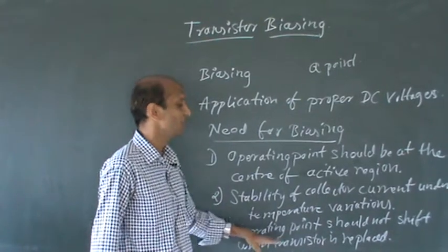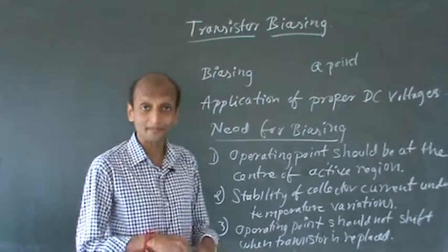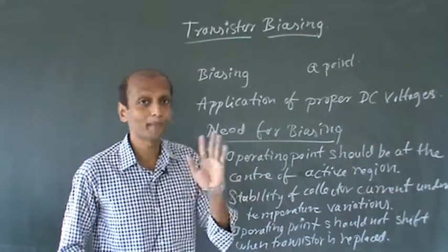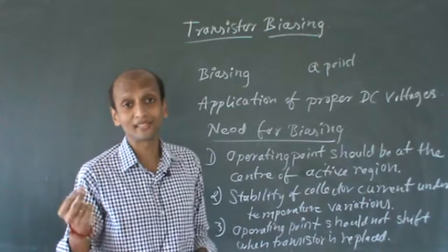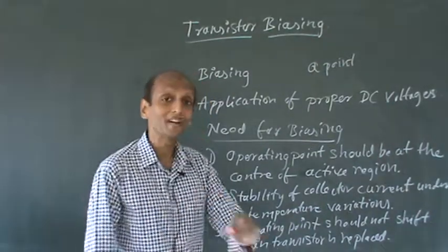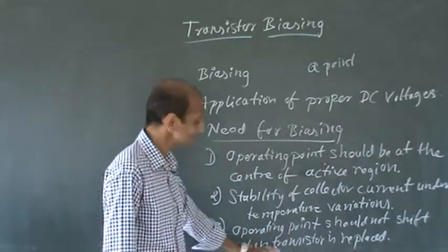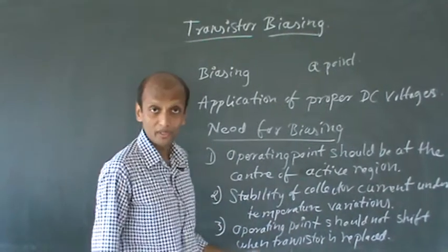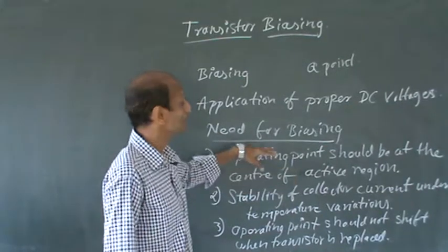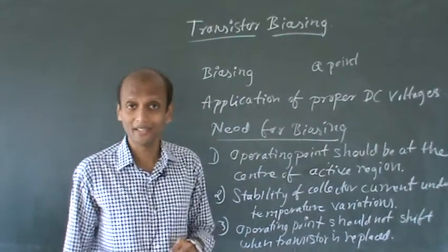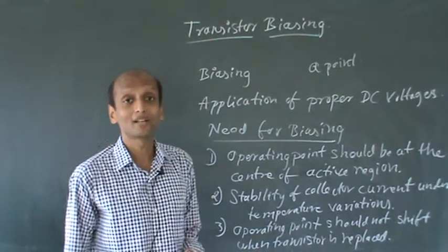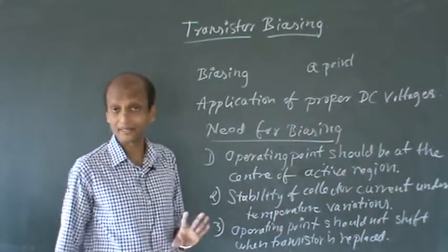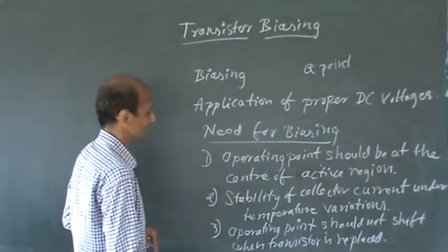The third point is: the operating point should not shift if you replace the transistor. If I have designed a circuit with proper biasing voltage and then replace the transistor with another transistor, nothing should change. So these three important points are the need for biasing: to make your transistor work as required.